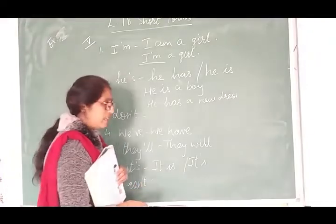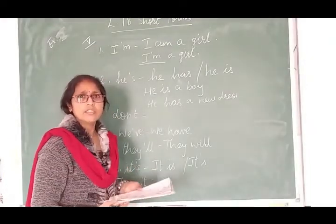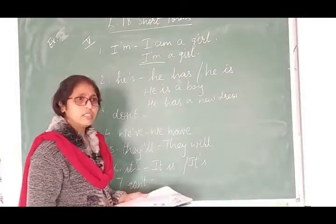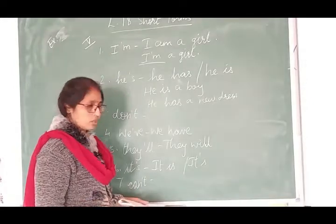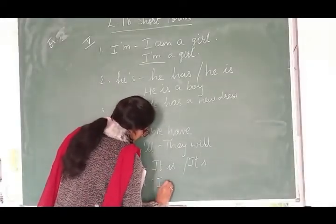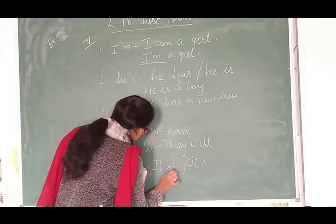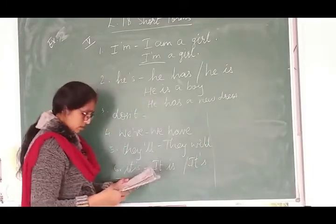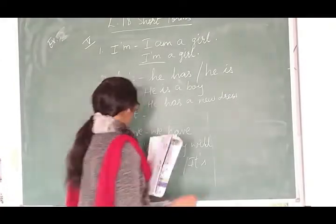Next, can't, can't ka form kya hai? Cannot. To, I can't read in Tamil aise bhi likh sakte ho. I can't dance, to I cannot dance aise bhi likh sakte ho ya can't use karke karna toh bhi kar sakte ho, okay. To I, he, she kuch bhi likh sakte ho okay. He can't walk.